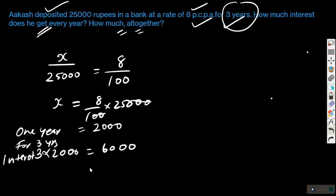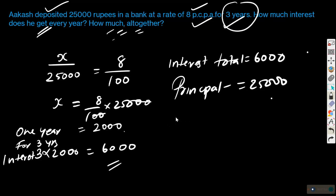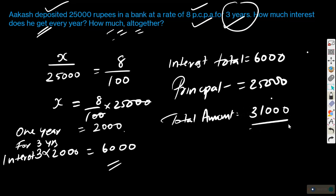Akash had deposited 25,000, so he will be getting 6,000 as interest. The total amount he will be receiving after three years is principal plus interest: 25,000 plus 6,000 equals 31,000 rupees.